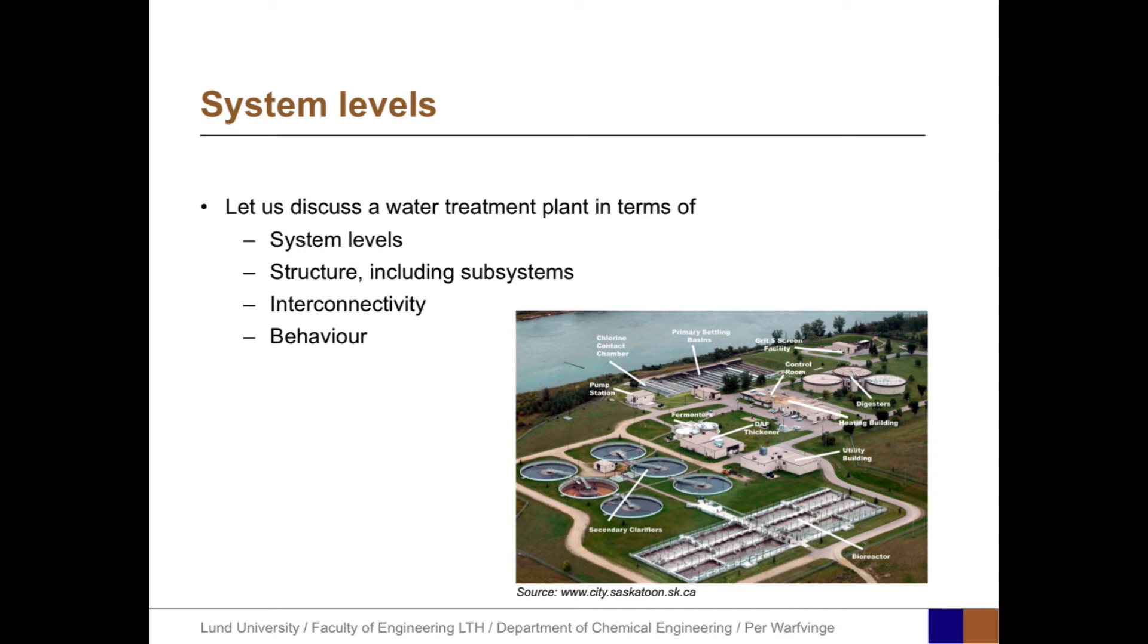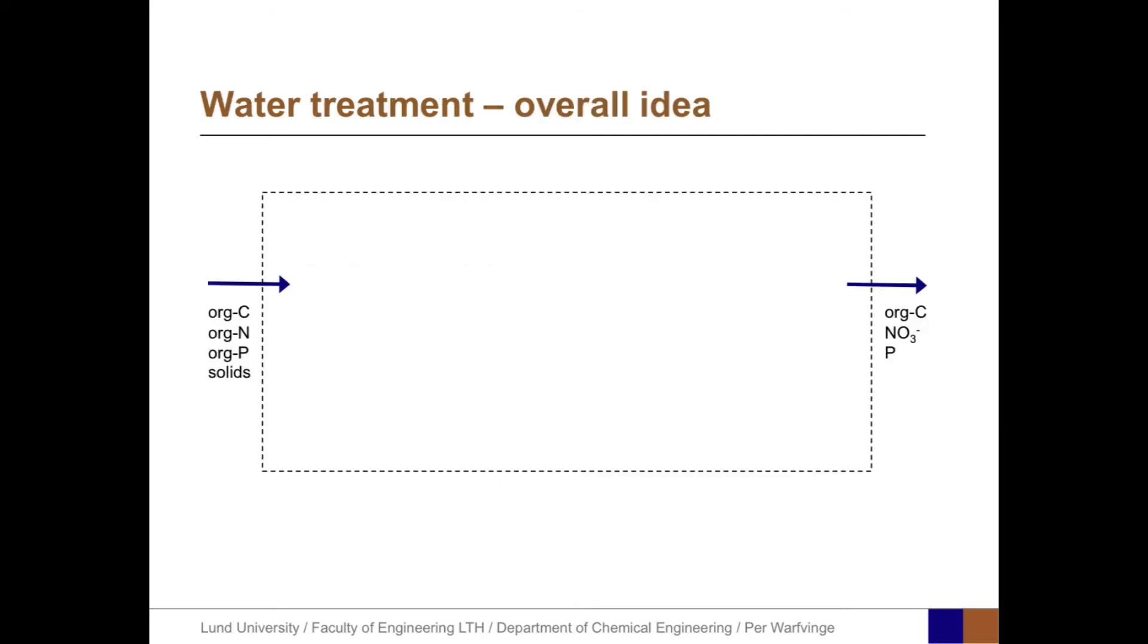Let us discuss a water treatment plant in terms of system levels, structure, subsystems, and interconnectivity. This aerial photograph illustrates the complexity of engineered systems. It's very important to quantify the fluxes between the various parts. Process calculations can be used to design such systems, not only understand them. What taxpayers pay for is to have an input stream with organic carbon, nitrogen, phosphorus, and solids, and an output stream with treated water. That is the most simplified picture.